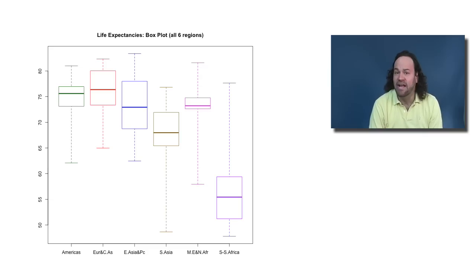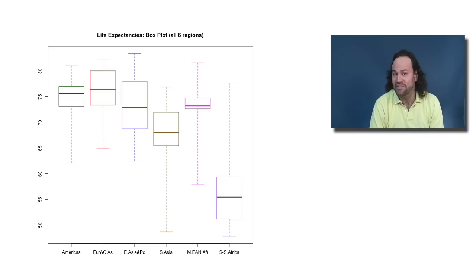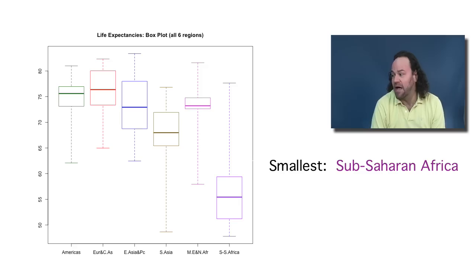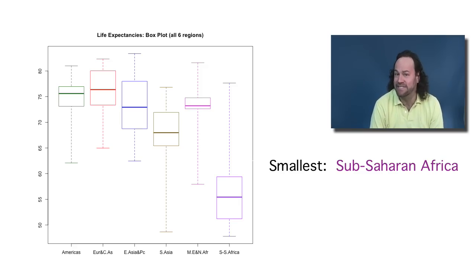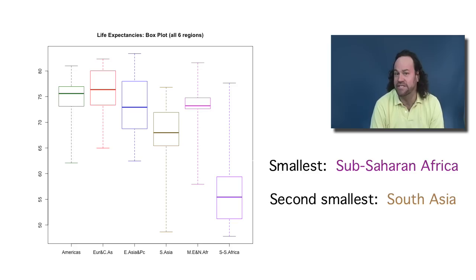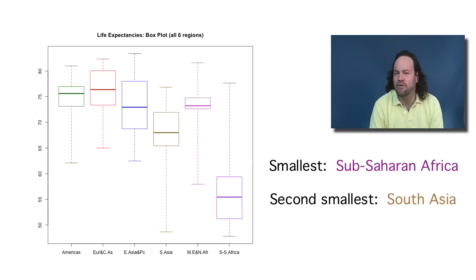We can also do a box plot of all six regions side by side. Looking at this, Sub-Saharan Africa does indeed appear to have the smallest life expectancy of all six regions, South Asia appears to be a little bit lower than the others, and the other four regions all appear to be fairly similar.